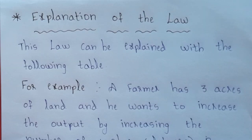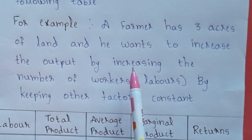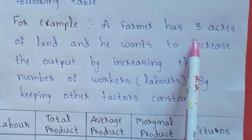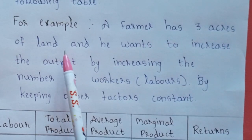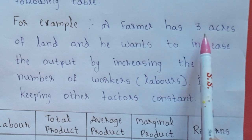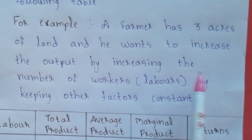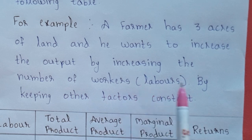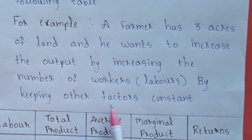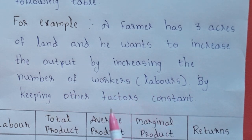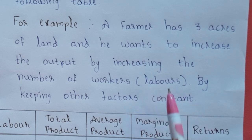Explanation of the law. This law can be explained with the following table. For example, a farmer has 3 acres of land, and he wants to increase the output by increasing the number of workers or labours by keeping other factors constant.